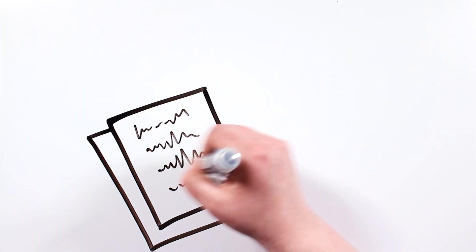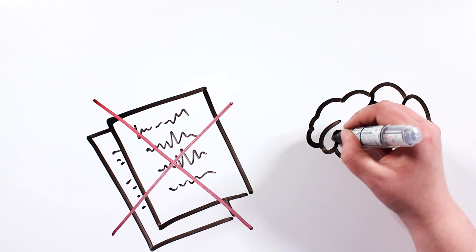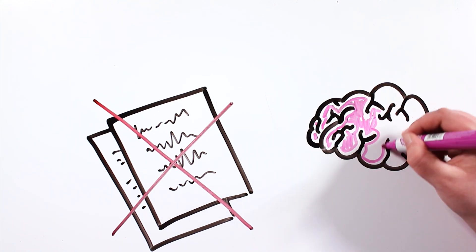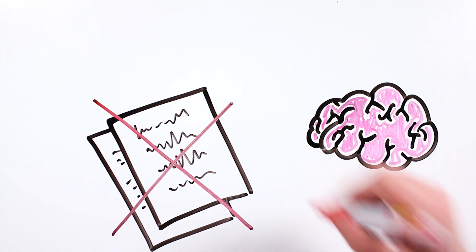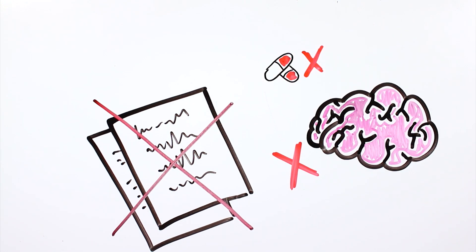There isn't a specific test to diagnose Charles Bonnet Syndrome. The only thing they can do is discard the idea that hallucinations are provoked by a mental health problem, or that they are the effect of some drug or medicine.